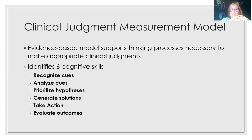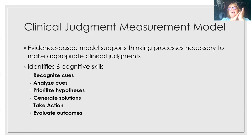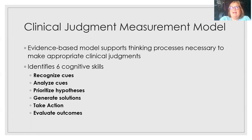In the CJMM Clinical Judgment Measurement Model, one of the exciting things is that it's evidence-based — we bring evidence right into practice at the point of care, and it helps us make those clinical judgments that continuously refine our practice. There are six cognitive skills identified as essential to this model that work in a stepwise fashion, but it is always cyclical or iterative. We don't go from beginning to end and stop; we continue to go around and around as necessary.